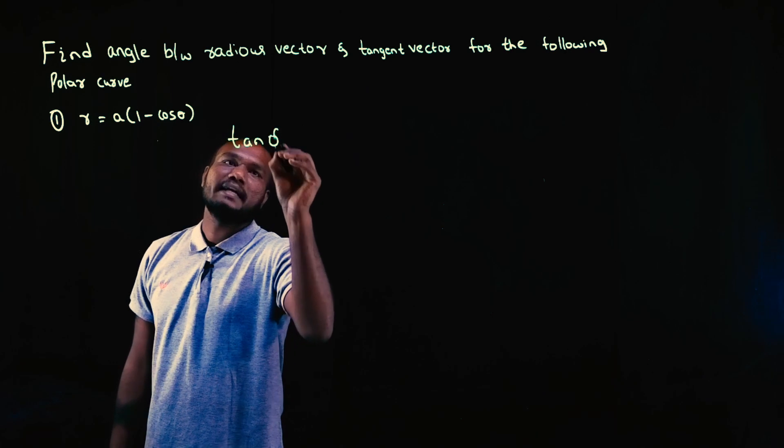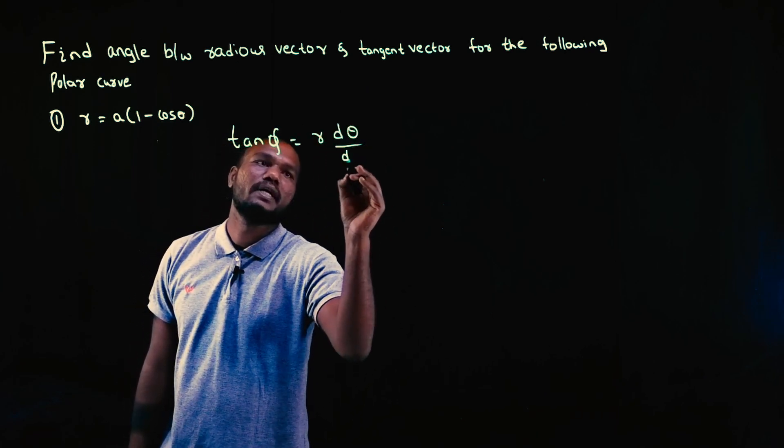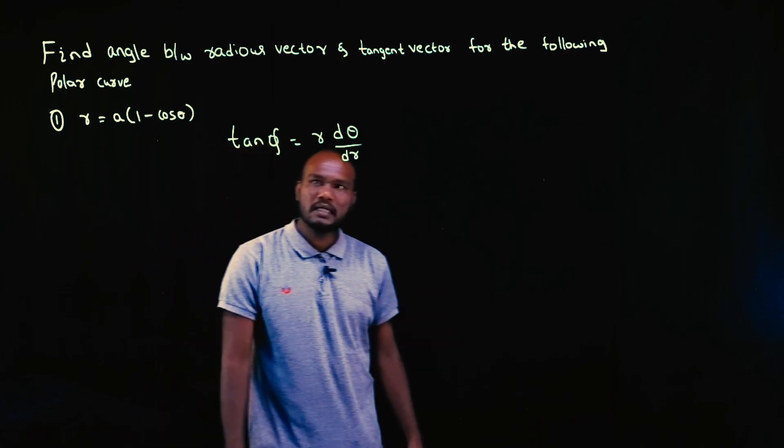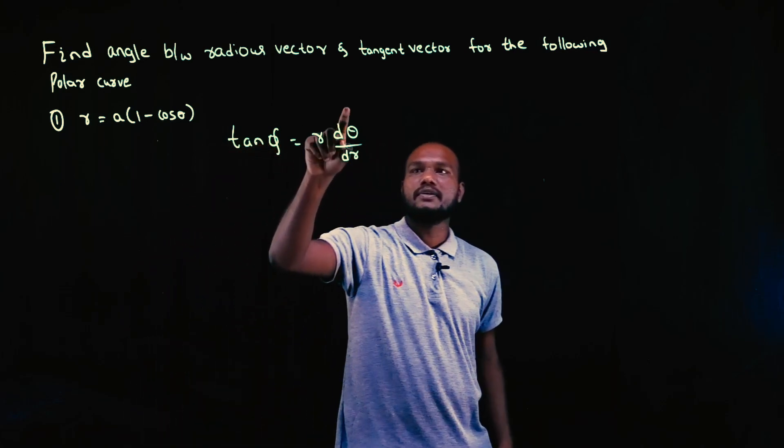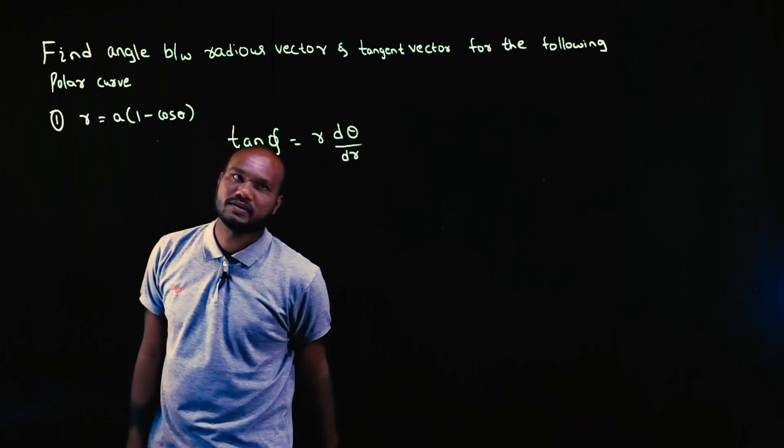What is the formula? Tan φ is equal to r into dθ upon dr. This is the formula. Tan φ is equal to r into dθ by dr where φ is the angle between radius vector and the tangent vector.